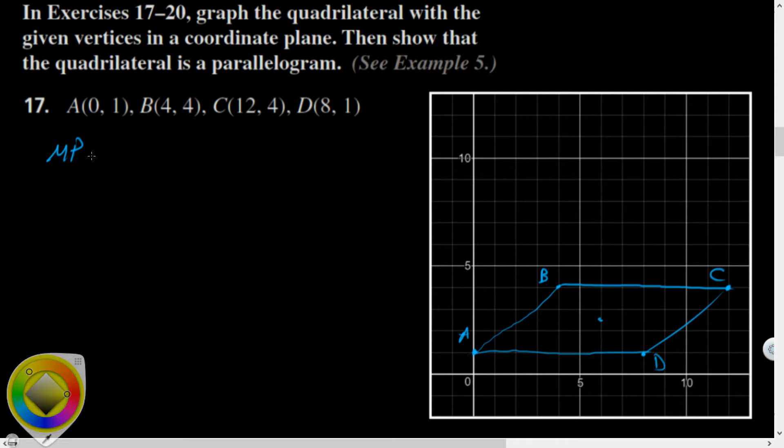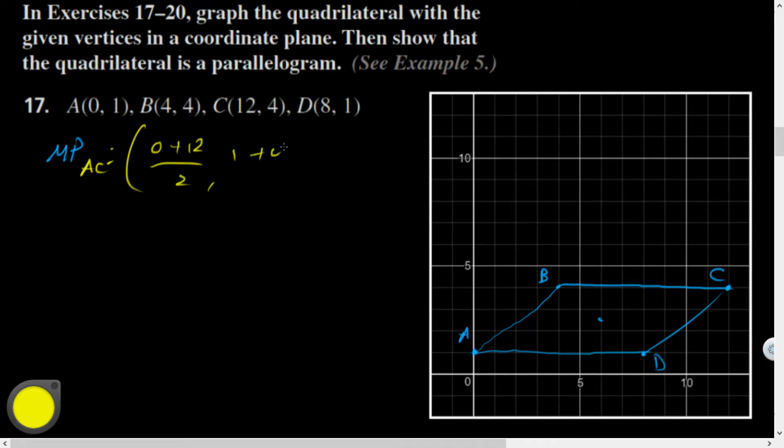So, let's do the midpoint of AC is going to be 0 plus 12 over 2 comma 1 plus 4 over 2. So that's going to be 6 comma 5 halves, 2 and a half, over 6 up 2 and a half. Hey, I happen to predict that pretty well.